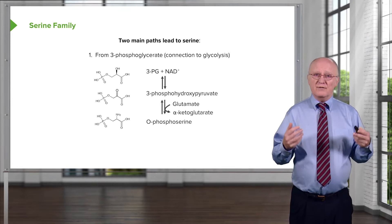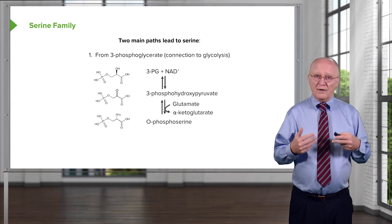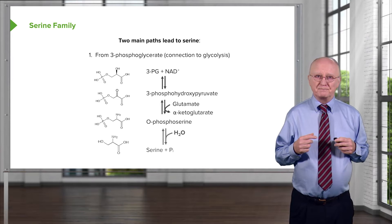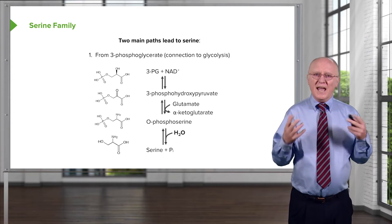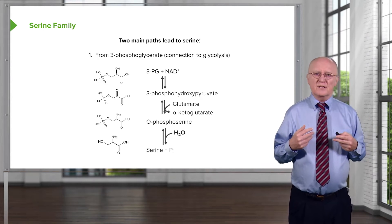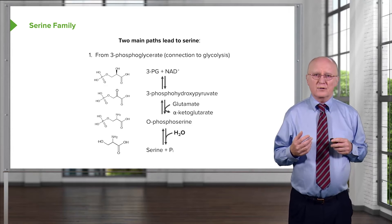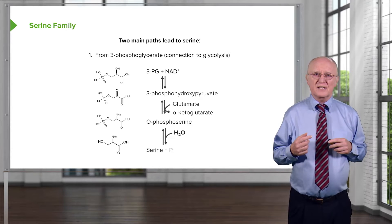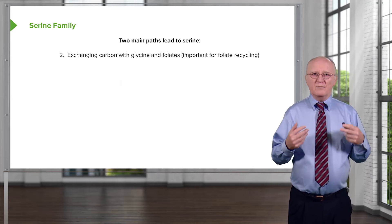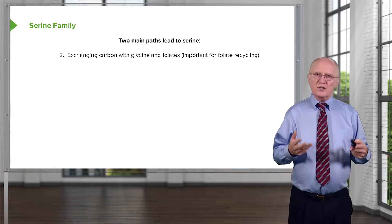Transamination of 3-phosphohydroxypyruvate leads to O-phosphoserine, and the removal of phosphate from O-phosphoserine results in the production of the amino acid serine. It's a very simple set of steps. A second way of making serine starts with glycine.